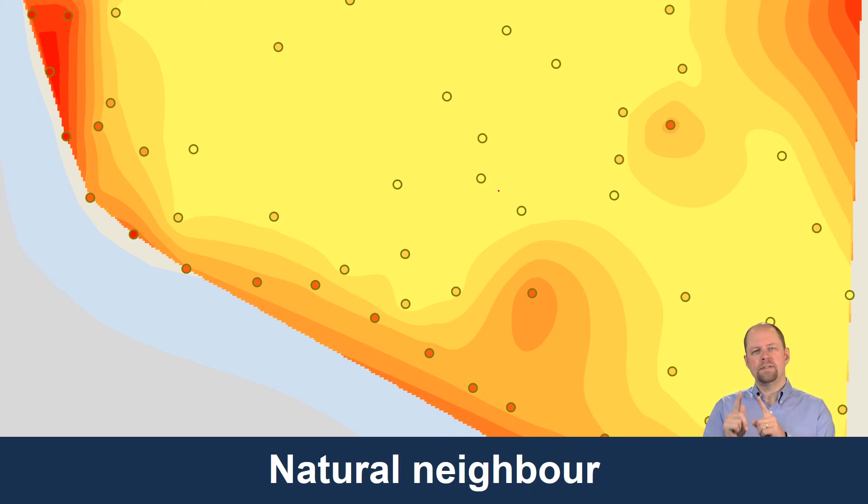That's because for every single cell in this dataset, it's going through that process I just described—creating a new polygon, doing the weighting, creating the calculation for that cell, and moving on and doing it again.